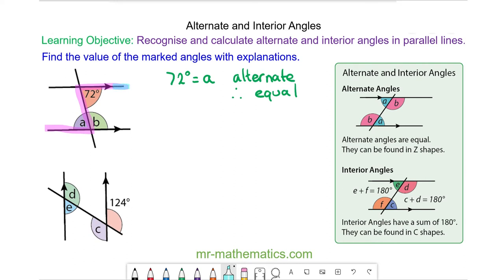And the 72 degree is interior with angle B. So 72 plus angle B will equal 180 degrees. So angle B will be 108 degrees.